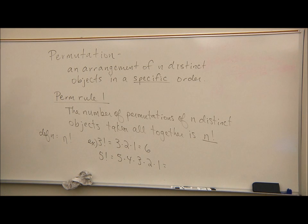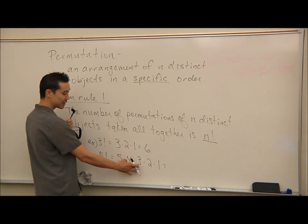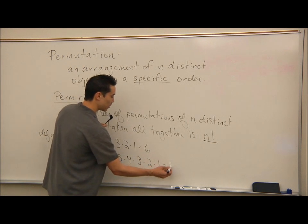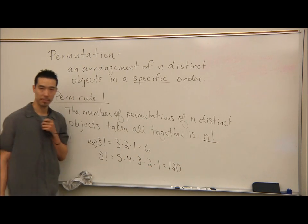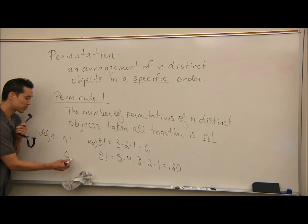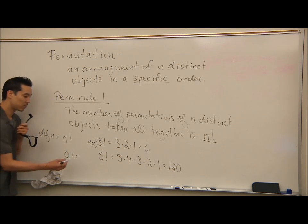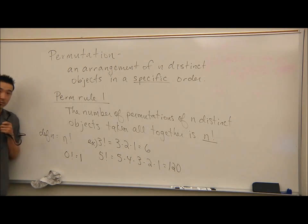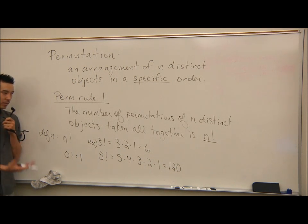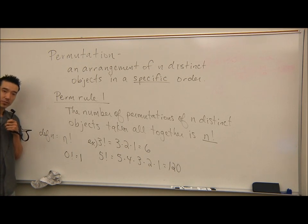Similarly, 5 factorial would be 5 times 4 times 3 times 2 times 1. Multiplying that together: 5 times 4 is 20, times 3 is 60, times 2 is 120. Also, 0 factorial is defined as equal to 1. Please include that in your notes, because some formulas will have a 0 factorial.